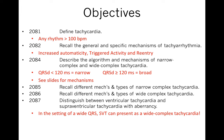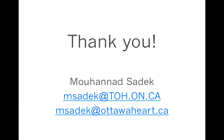We've gone through all the objectives: define tachycardia — any rhythm more than 100 beats per minute; recall the general and specific mechanisms — increased automaticity, triggered activity, and re-entry; describe the algorithm and mechanisms of narrow versus wide complex tachycardia. QRS less than 120ms is narrow, more than 120ms is wide. Narrow means coming from the atria down a healthy His-Purkinje system; wide means coming from the atria with an abnormal conduction system, or from the ventricles. Thank you very much — please feel free to forward any questions or concerns.